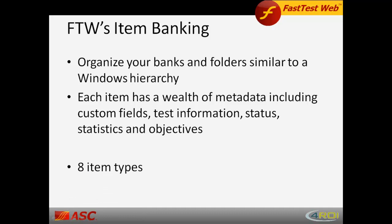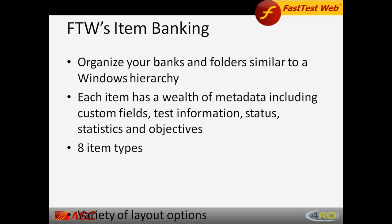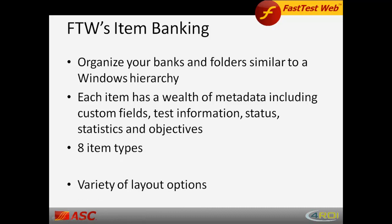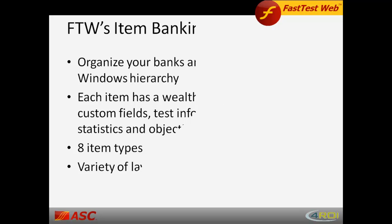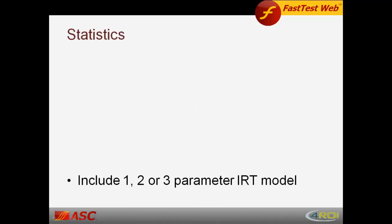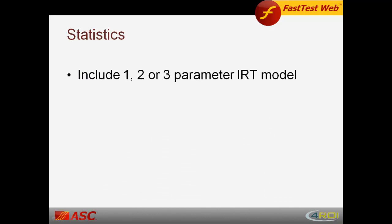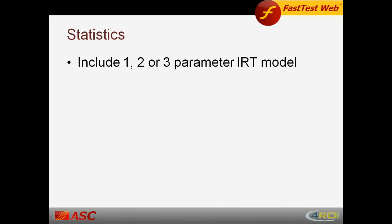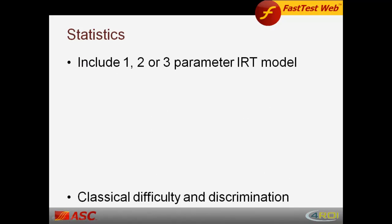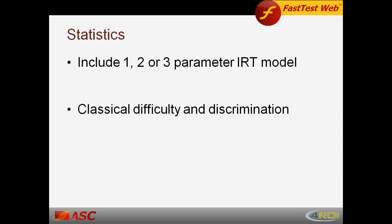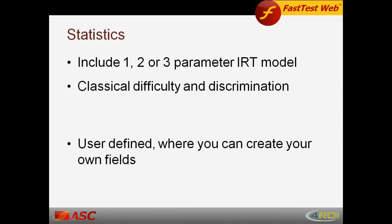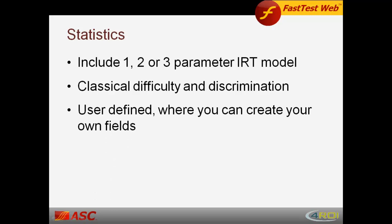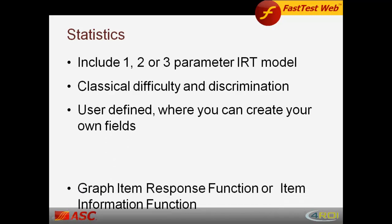FastTestWeb currently offers 8 item types for your testing needs and a variety of layout options which allows you to offer your items in a diverse manner. Statistics create a sound professional exam. FastTestWeb offers 1, 2, or 3-parameter IRT model, classical difficulty and discrimination, user-defined fields where you can create your own fields, and you can also graph item response function or item information function.